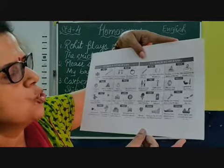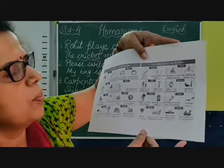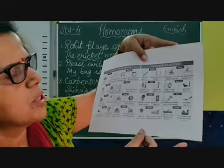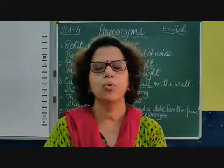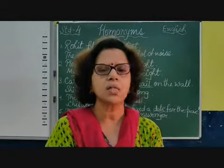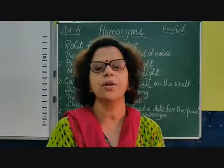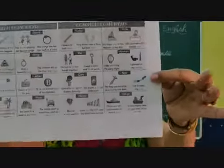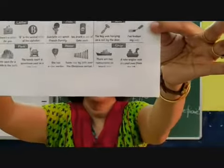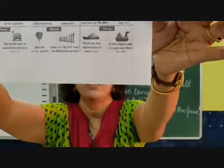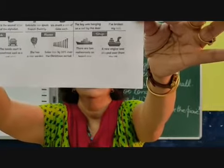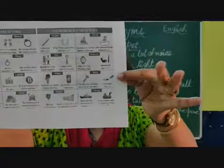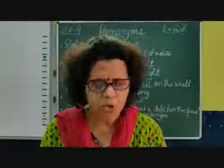And 'ship' — 'There are two restaurants on board the ship' — a large vessel. And 'a new engine was shipped' — ship means to send or dispatch. When parcels come, they are written as 'shipped,' meaning they are being sent. So these are some of the homonyms. They have the same spelling, the same sound, but different meanings. Thank you.